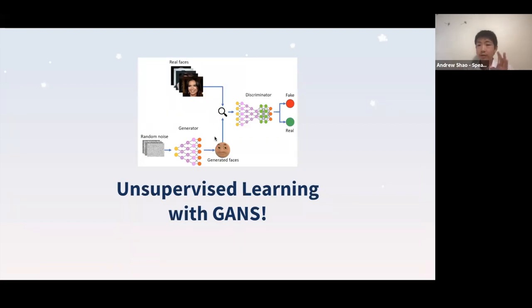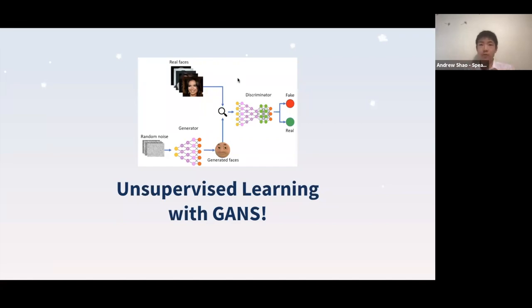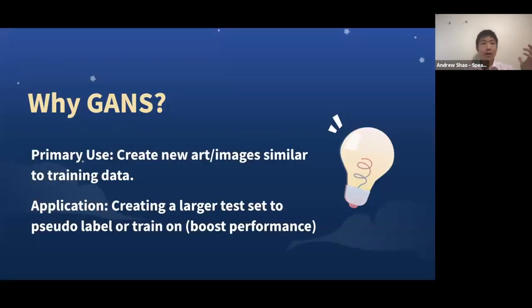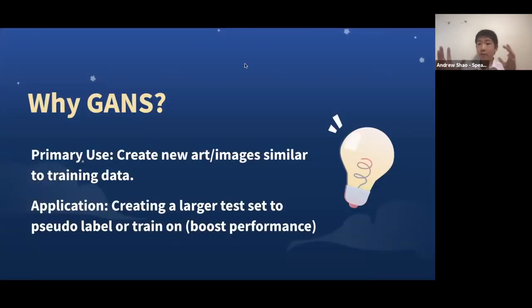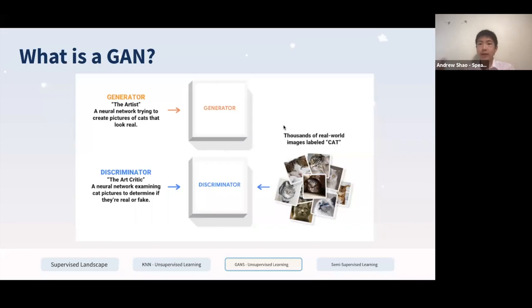Now let's dive into GANs, or generative adversarial networks — another powerful unsupervised technique used to create new images and new data to improve your models further. Why would we even use GANs? For things like Kaggle, sometimes you won't have the data — it might be proprietary and you can't web scrape millions of images. Sometimes you only have certain types of images you can learn on. GANs provide a very powerful method to create new images and new data to train on — for instance, you might create a larger test dataset to then pseudolabel.